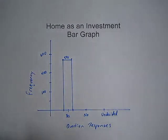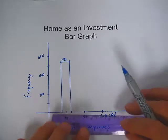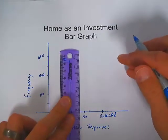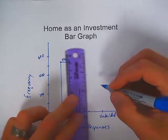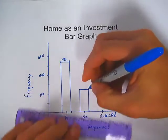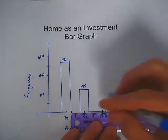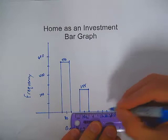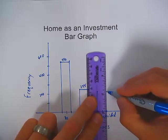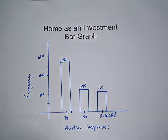For no, the frequency was 245, which will be pretty close to the middle between the 200 and 300 marks. I'll center the bar on no and draw it up to 245. For undecided, centered on its category, the bar goes up to 215 — a little shorter than the no bar. I'll label that 215 as well.